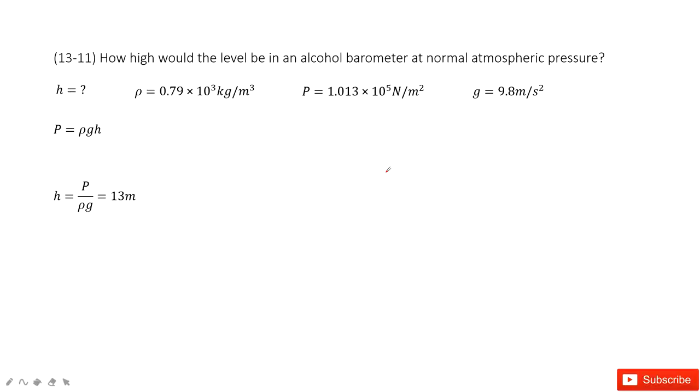So in this case, we have a column of alcohol, and we know it is at the atmospheric pressure. And we're asked to find H, the height.